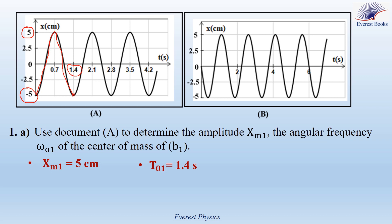So the angular frequency omega_01 is given by 2π over the natural period T_01. Substituting T_01 equal to 1.4 seconds, the angular frequency of the center of mass of B1 is equal to 4.49 radians per second.